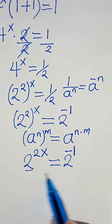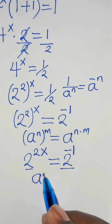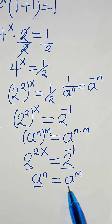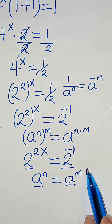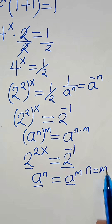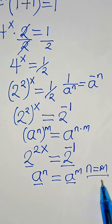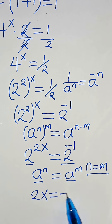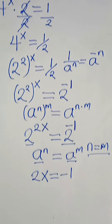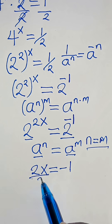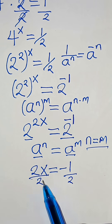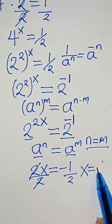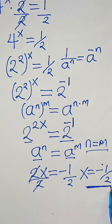Given that the bases are common — that is, a to the power of n equals a to the power of m implies n equals m — applying this property gives us 2x equals minus 1. Dividing both sides by 2, x equals minus one half, and this is the solution.